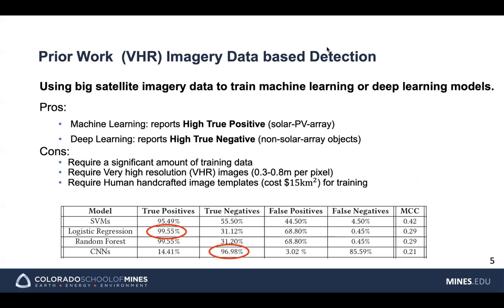There are many prior approaches. They typically train machine learning or deep learning models using big satellite imagery data. We benchmarked all the models and found that machine learning typically reports high true positives, meaning good performance detecting solar PV arrays. Deep learning typically reports high true negatives, meaning good performance detecting non-solar objects. The problem is these approaches require a significant amount of training data and very high resolution images, so the cost is high.